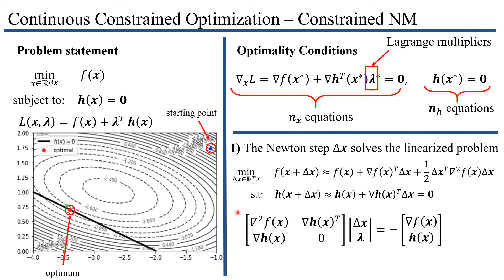I now put this system in matrix notation. The matrix-vector product gives you exactly the same system as before. Solving this system gives you delta x — the step you're going to take for your Newton iteration.